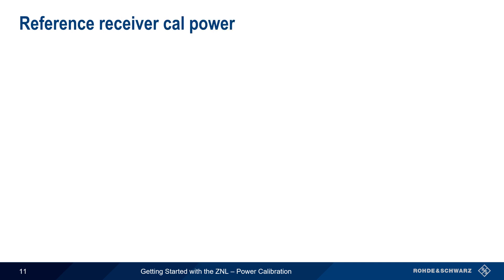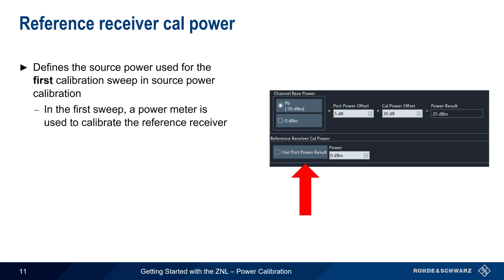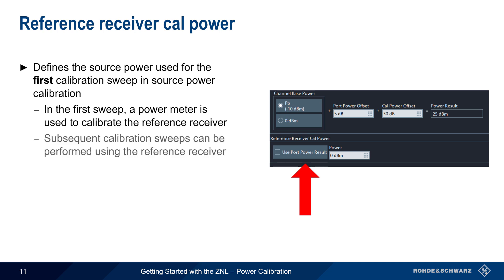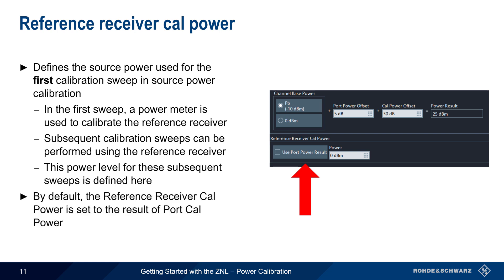Underneath the channel base power settings is Reference Receiver CalPower, which defines the source power used for the first calibration sweep in source power calibration. As we'll see later in this presentation, an RF power meter or sensor is used during this first calibration sweep to calibrate the Reference Receiver. However, subsequent calibration sweeps can be performed using only the Reference Receiver, and Reference Receiver CalPower defines the power level for these subsequent sweeps. By default, the Reference Receiver calibration power is set to the result of the Port Power calibration.